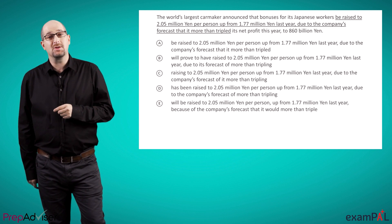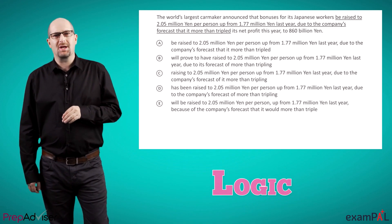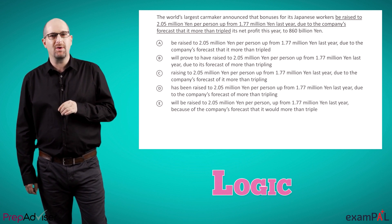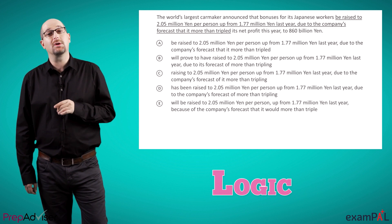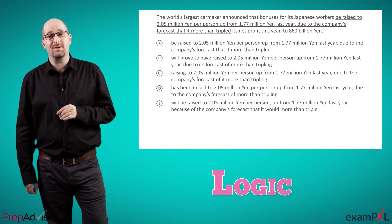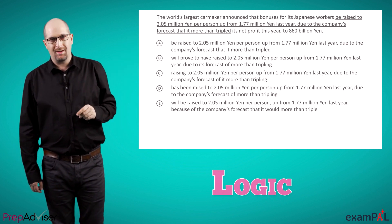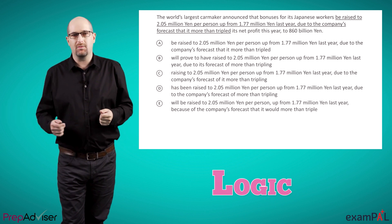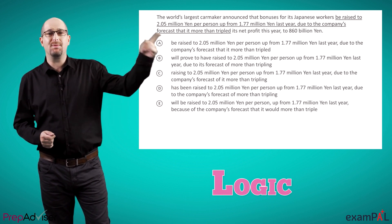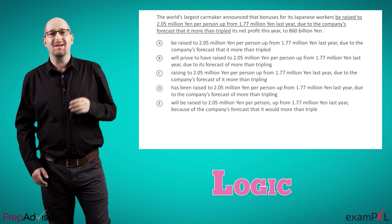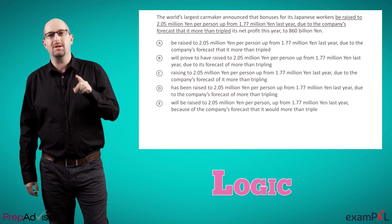Sometimes correcting the sentence will require we understand its logic. Pause the video and try to solve this question. 'The world's largest car maker announced that bonuses for its Japanese workers be raised to 2.05 million yen per person, up from 1.77 million yen last year, due to the company's forecast that it more than tripled its net profits this year to 860 billion yen.' In this sentence, the company is announcing something that will happen, and thus we need the word 'will' before 'be raised.' Another thing that stands out is that a forecast is, by definition, of something hypothetical that happens in the future, and thus the forecast must be that this company would triple its profits this year, and not 'tripled.' Taken together, these corrections point to answer E.